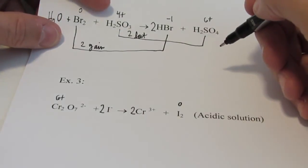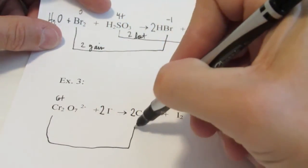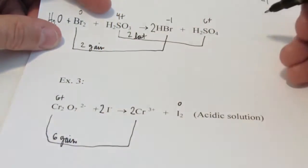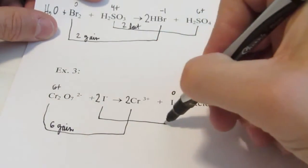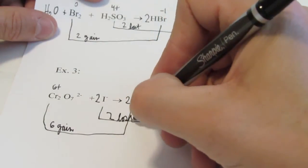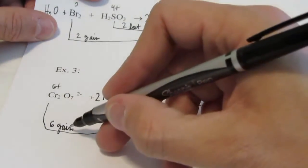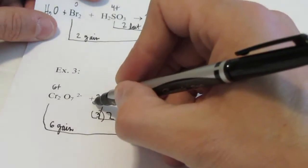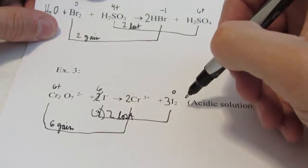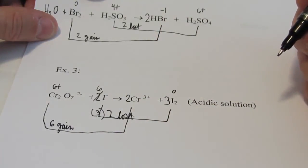Step 1A: two chromiums, so I put a two here to balance — they changed oxidation numbers. Two iodines, so I'll put a two there. Steps one and 1A are done. Then chromium goes from 6⁺ to 3⁺ — each one gained three, and two of them do that, so six were gained. Iodine goes from −1 to zero — each iodine lost one, and two of them did that, so two were lost. I'm going to triple the iodine-containing species — I'll change that to a six and put a three there — so six iodines each losing one equals six lost. Step two is done.